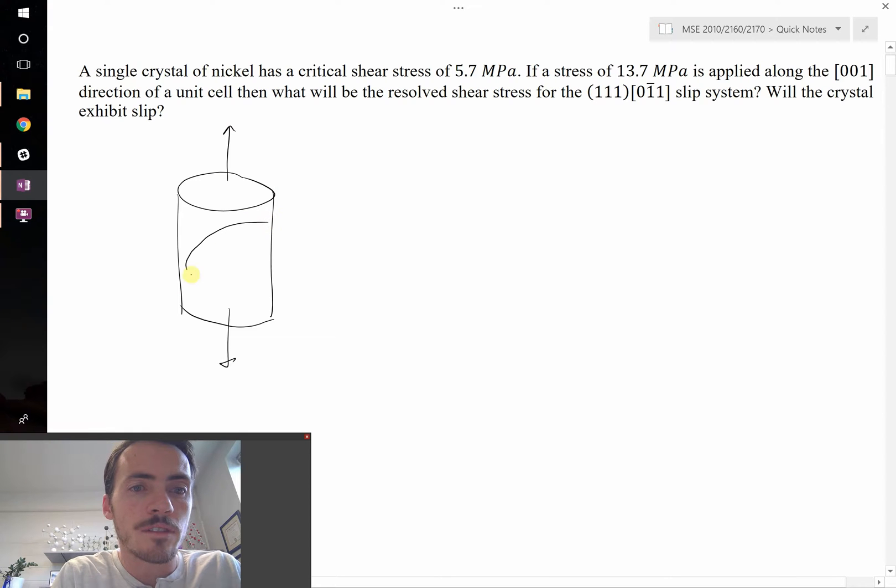Instead, you have some sort of plane within your crystal that might be your slip plane, and then you have some direction in that plane, say out this way. What you really need to know is if that's the direction normal to your slip plane, then you care about these two angles right here and right here.